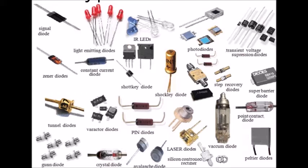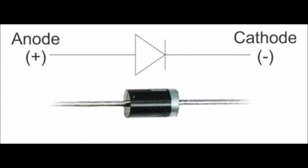Impurities are added to create a region on one side that contains negative charge carriers, called an N-type semiconductor, and a region on the other side that contains positive charge carriers, called a P-type semiconductor, and the diode is created. When the N-type and P-type materials are attached together, a momentary flow of electrons occurs from the N-side to the P-side, resulting in a third region between the two where no charge carriers are present. This region is called the depletion region.